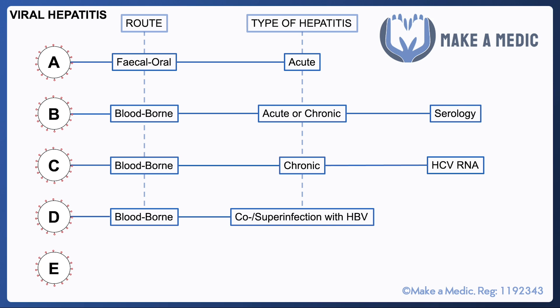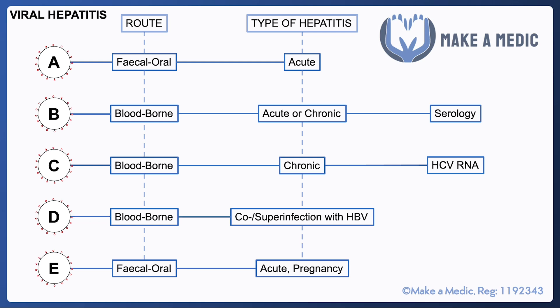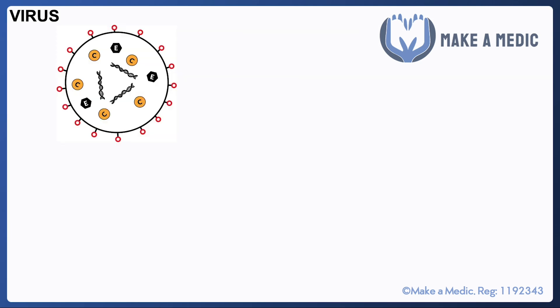Hepatitis E, like hepatitis A, is fecal-oral. The key points to know are that it tends to cause severe illness in pregnancy and it tends to be acute as well. The three main ones we're mostly interested in are A, B, and C, so we're going to focus in on hepatitis B, mainly because that tends to constitute most of the questions that come up in exams.